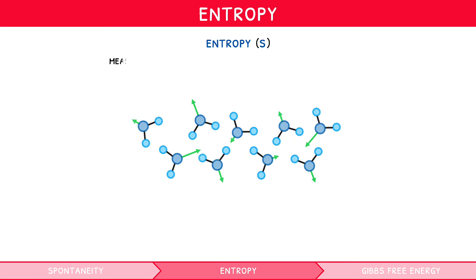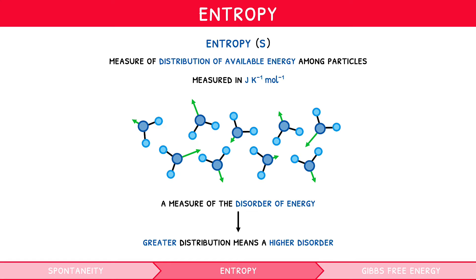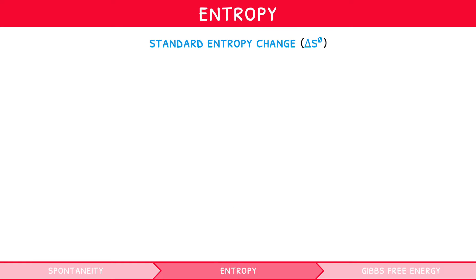Instead, we often look at spontaneity in combination with entropy. Entropy is a measure of distribution of available energy among particles, measured in joules per kelvin per mole. It is also colloquially known as a measure of the disorder of energy. A greater distribution of energy means a higher entropy or disorder. Just like with enthalpy, we can measure the change in entropy, known as standard entropy change, denoted by delta S.